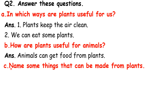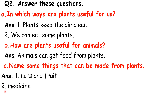C: Name something that can be made from plants. The answer is nuts and food — for example, pistachios, cashew nuts, walnuts, almonds, and fruits like apples and oranges. Number two is medicine — human beings also make medicine from plants.